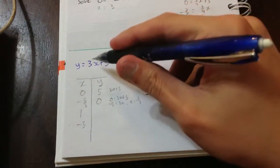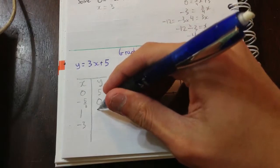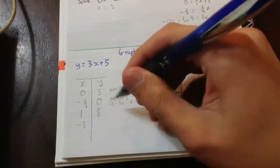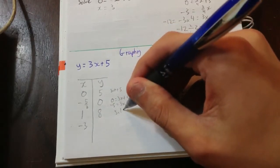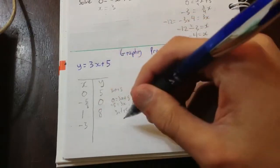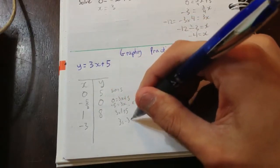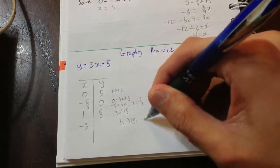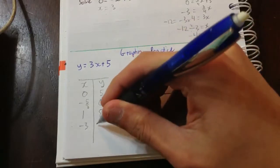What does y equal? y equals 3 times 1, 3 plus 5, which equals 8. Or 3 times 1 plus 5. or minus 3, 3 times minus 3 plus 5 equals minus 9 plus 5 equals minus 4.